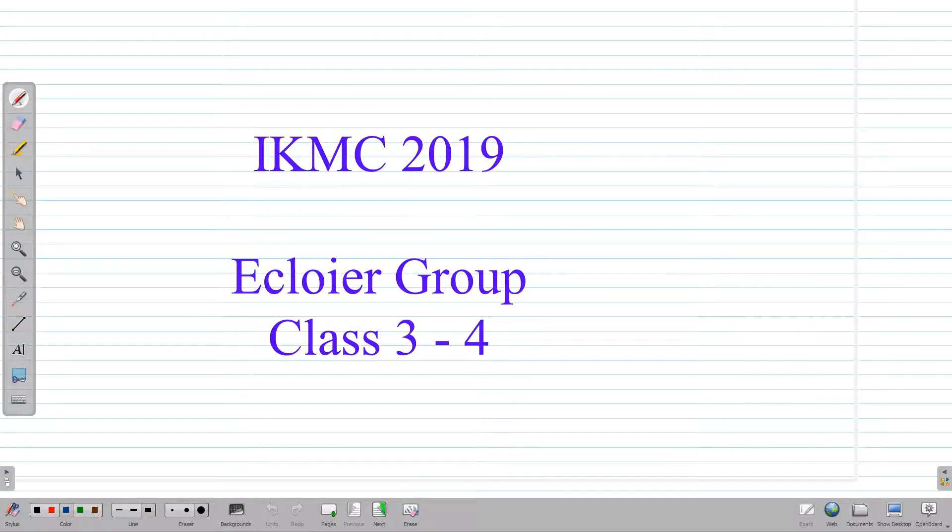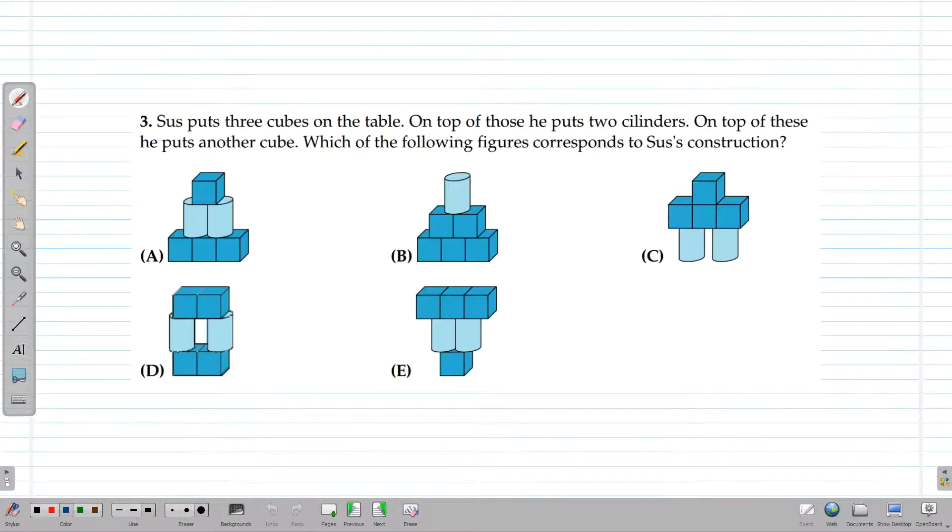So let's have a look at today's question. Sus puts 3 cubes on the table. On top of those, he puts 2 cylinders. On top of these, he puts another cube. Which of the following figures corresponds to Sus's construction?